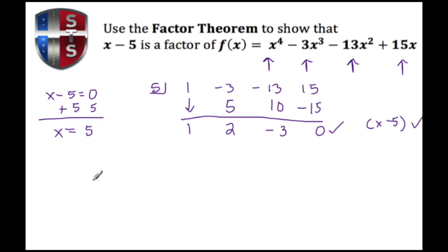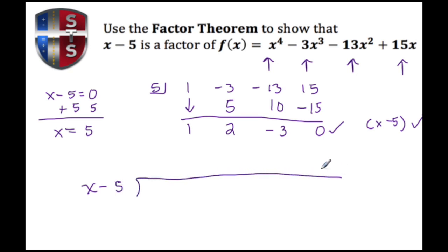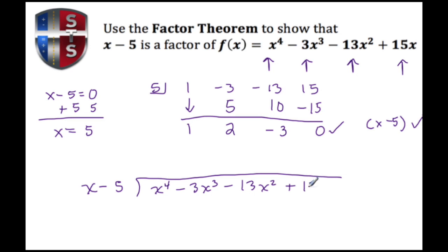Now let's do the same thing using long division. We write the entire expression X minus 5 as the divisor, then write the full polynomial: X to the fourth minus 3X to the third minus 13X squared plus 15X.